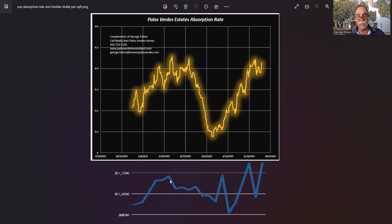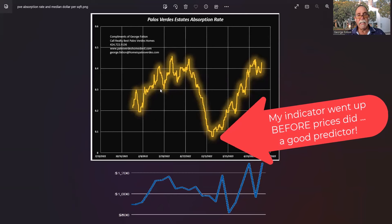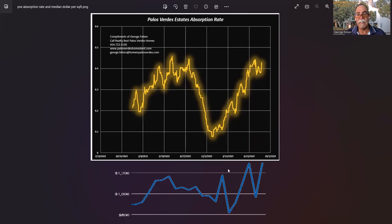So what happened to prices during that same time? Well, we see that the median dollar per square foot was down here. As the absorption rate increased, so did sale prices. As the absorption rate fell, so did sale prices. And in fact, this kind of gives a precursor to what will happen next with prices. So as we see this increase happen, my opinion is that we will see resiliency in home prices in Palos Verdes estates.